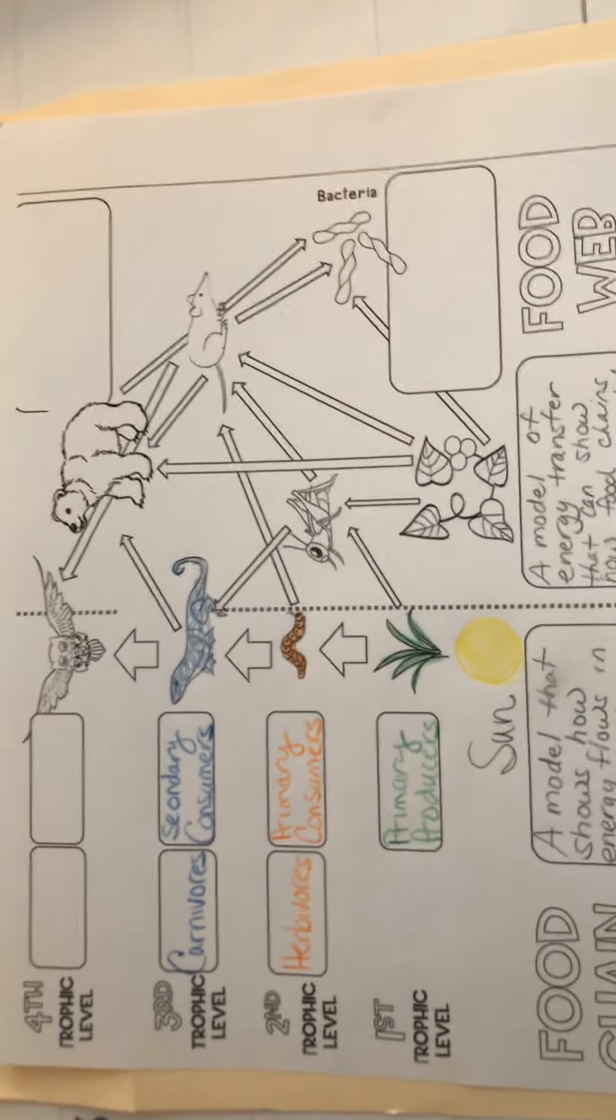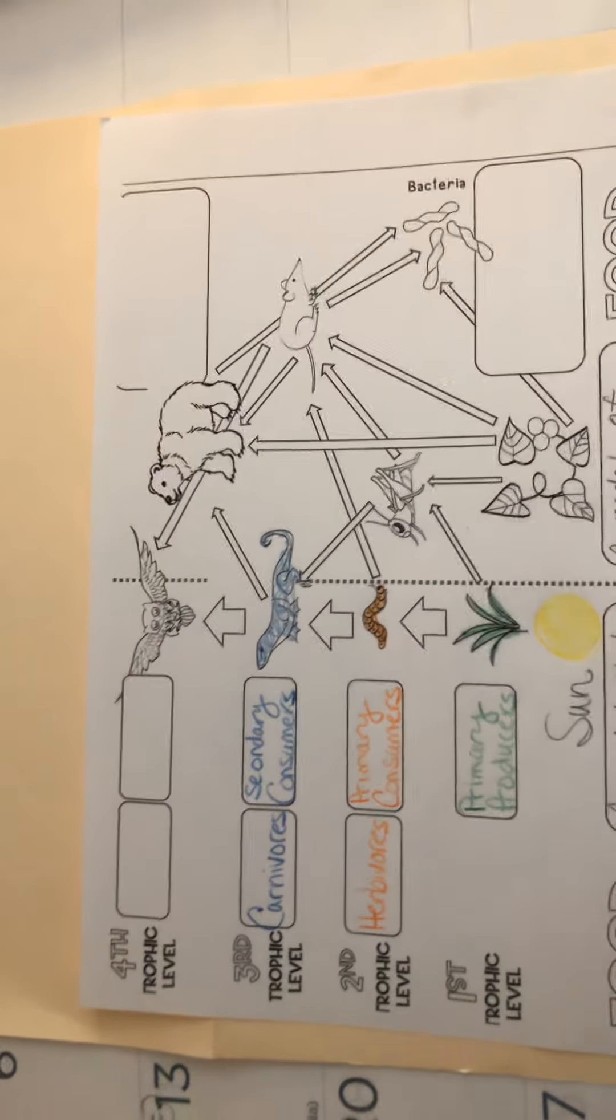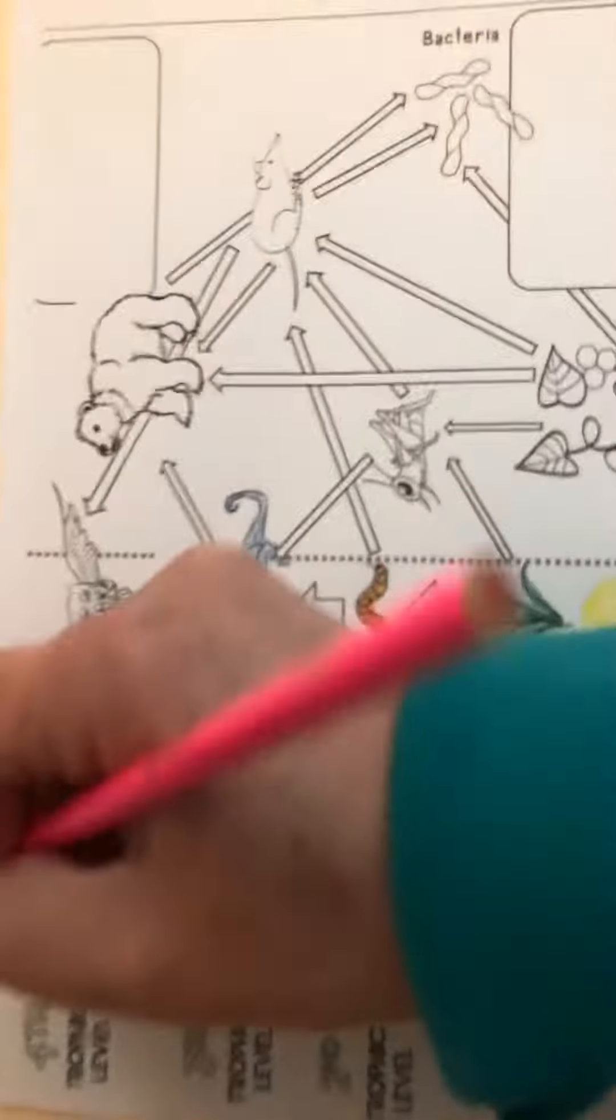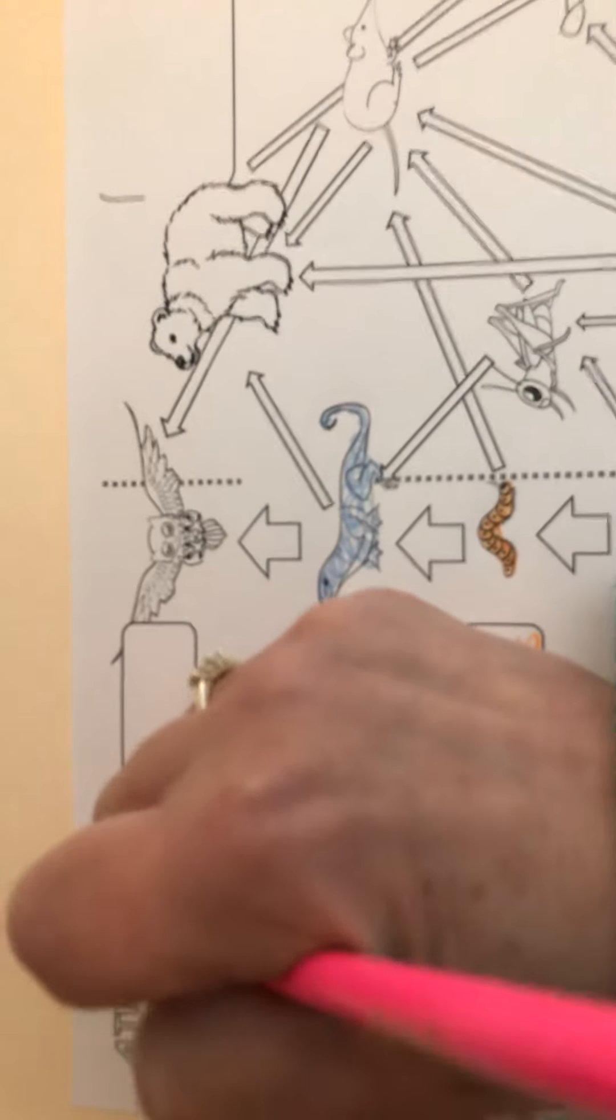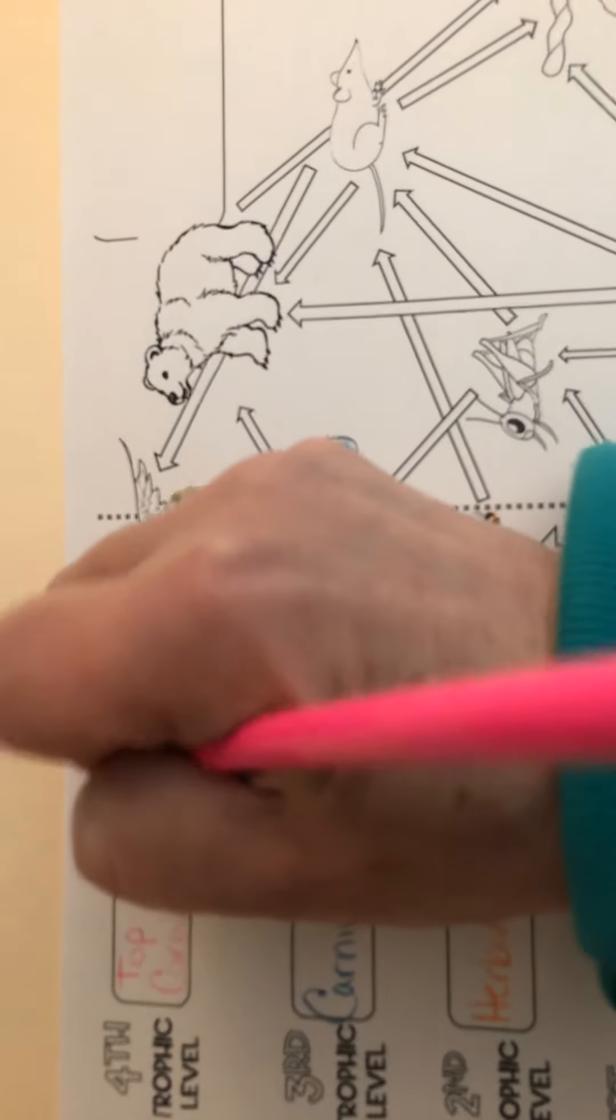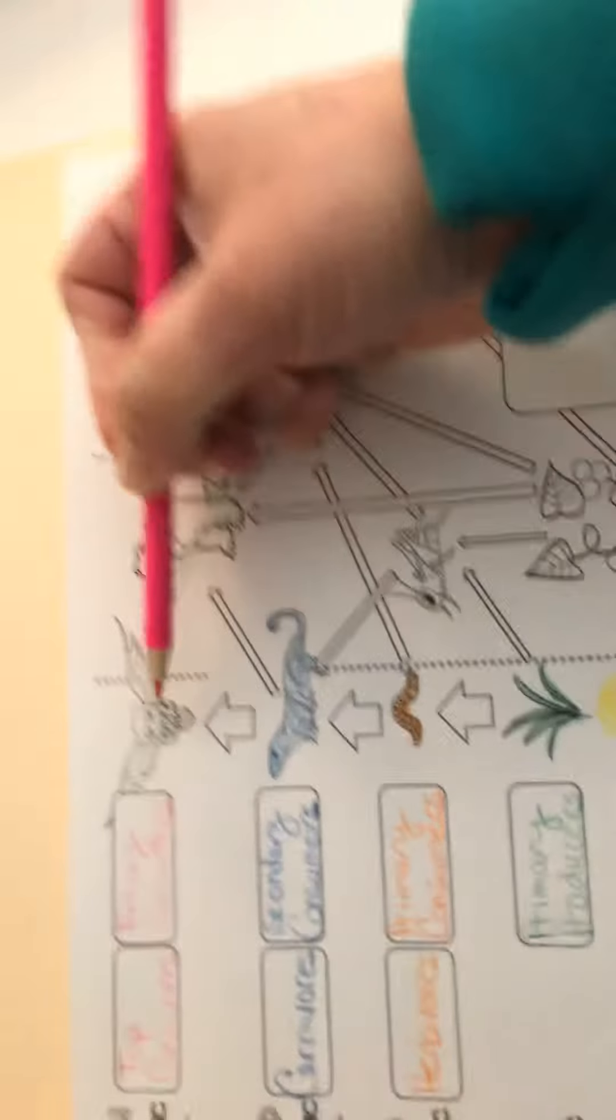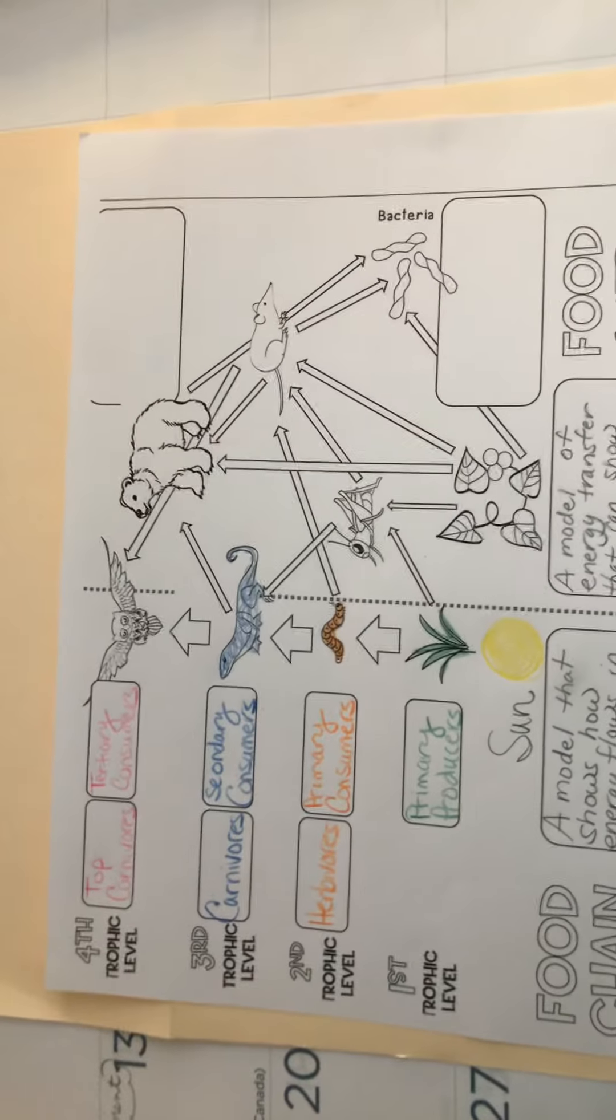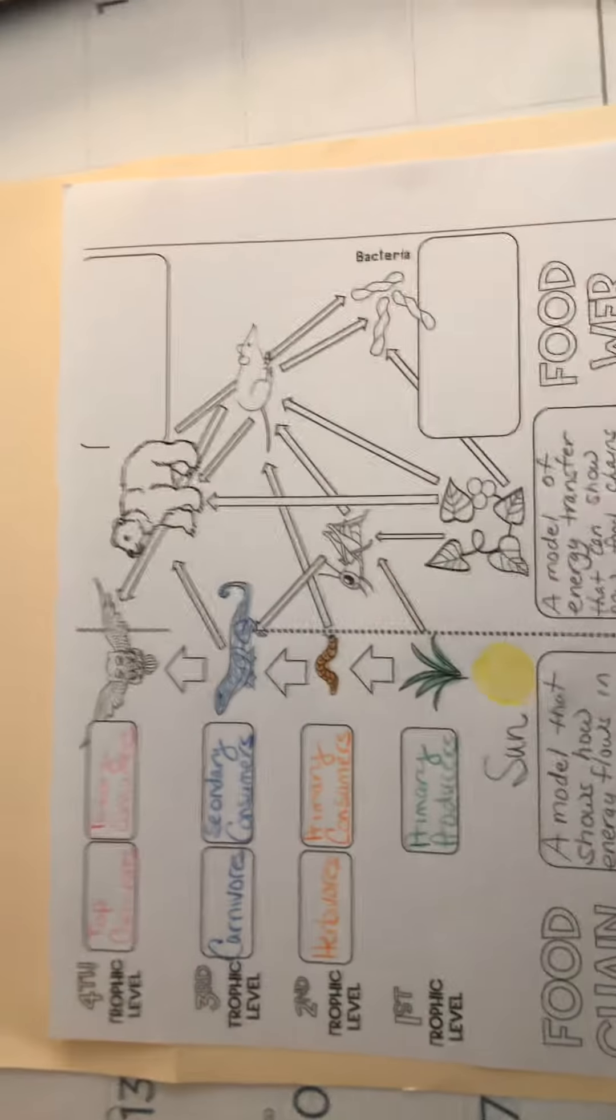that category. And then the last fourth trophic level are going to be the top carnivores, so those are going to be the guys that only eat meat at the very top of the food chain, and they're also called tertiary, and tertiary is a word that means third. You'll see where the third comes from in the fact that they're third up in line in the food chain here. This owl is something like a tertiary consumer.